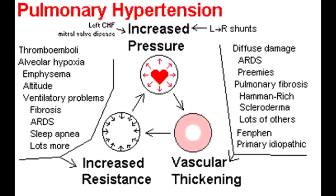What is the normal pulmonary artery pressure? The normal pulmonary artery pressure is between 10 and 14 millimeters of mercury. In pulmonary hypertension, the pulmonary artery pressure can become greater than 25 millimeters of mercury, or greater than 35 millimeters of mercury during exercise.